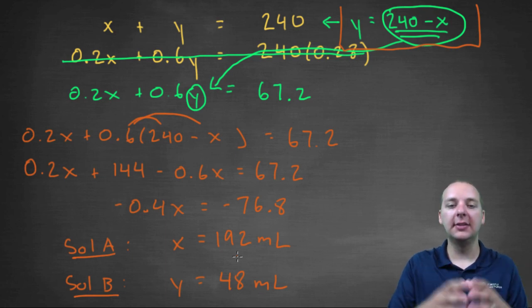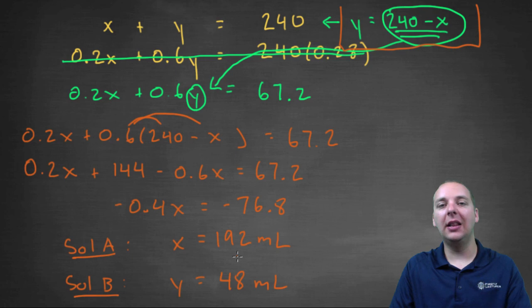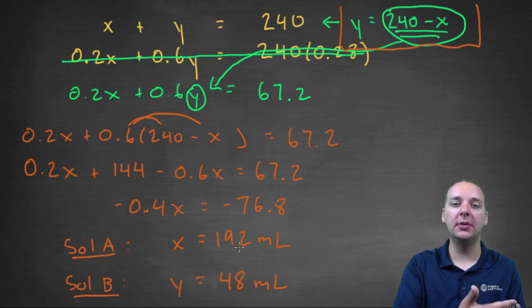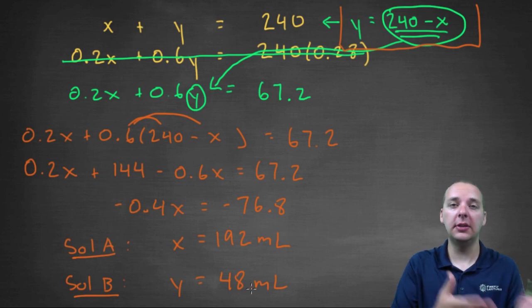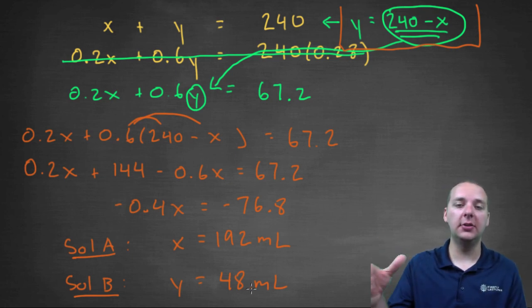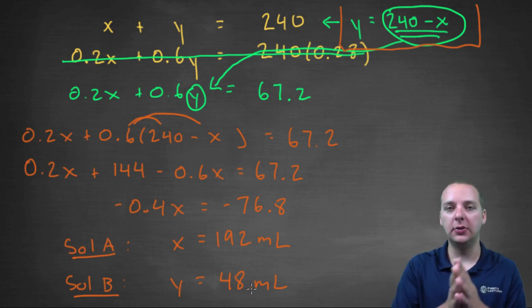Now one thing I find interesting, just as a side note, notice we needed a lot more of the 20% concentration than we did the 60%, probably because the mixture was only supposed to have 28% concentration, so you probably needed a lot more of the 20% concentration than you did of the heavily concentrated 60% solution.